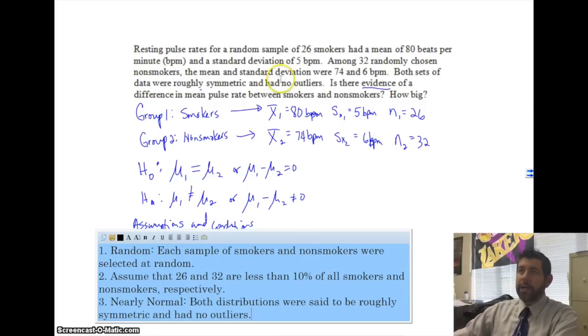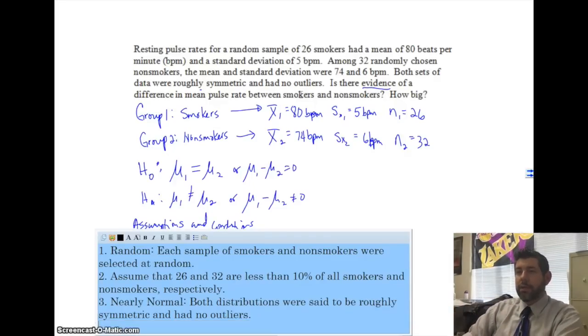Our third one is, what's our third condition? Sorry about my air conditioner, guys. My third condition is nearly normal. So, both distributions were said to be roughly symmetric and had no outliers. Now, where did I get that information from? I got it from right up here. So, the fact that it says it, I don't have to draw any histograms. I don't have to show that they are unimodal and symmetric. I can just say that they are because the problem said that they were.